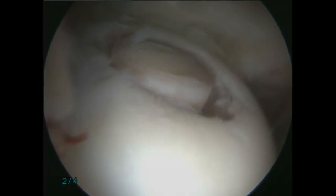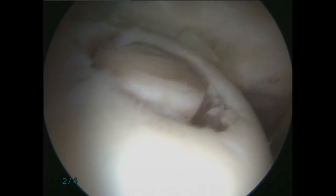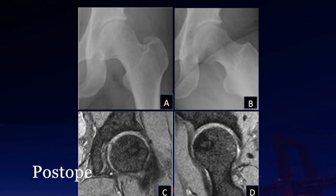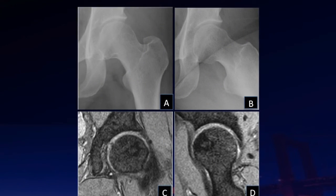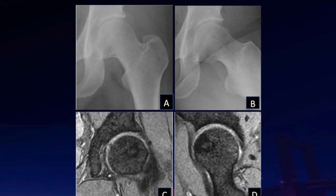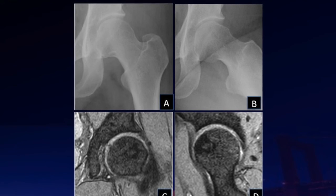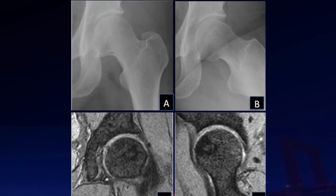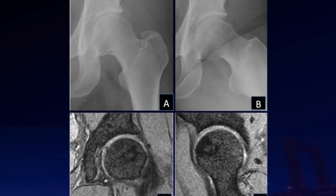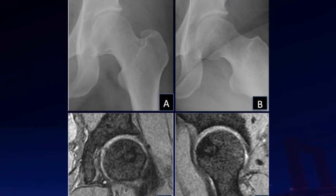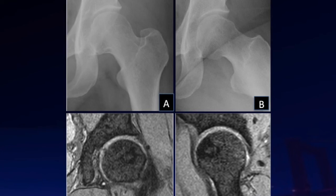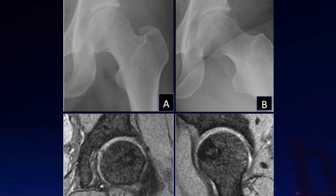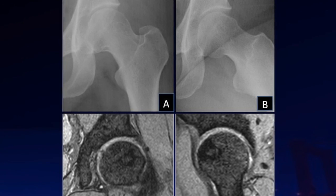Here you can see the good incorporation of the osteochondral graft. MRI and X-ray at one year after surgery show slight flattening of the femoral head, but good autograft incorporation with maintenance of the articular surface.